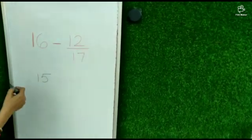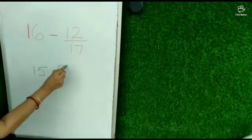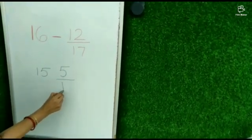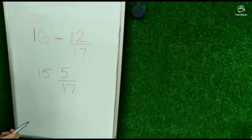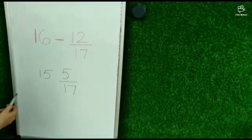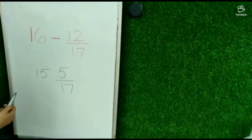17 minus 12, that is 5. So we will write 5 as a numerator, and the denominator will always be same. So children, see we got the answer in one second. And by using the school method it takes time. So it's very easy and interesting.